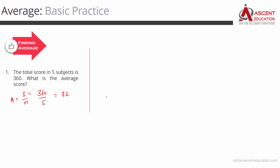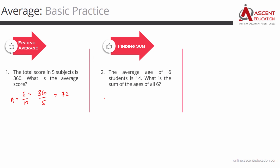The second example — let's find out the sum. The average age of six students: number of students is 6, average age is 14. So what is the sum of their ages? Sum equals average into number: 14 into 6 equals 84. So 84 is the sum of the ages of these six students.